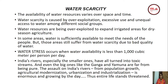India's rivers, especially the smaller ones, have all turned into toxic streams, and even the big ones like the Ganga and Yamuna are far from being pure. The assault on India's rivers from population growth, agricultural modernization, urbanization, and industrialization is enormous and growing day by day. This entire life stands threatened, and we all know that our Earth is called the blue planet because of water and how important water is for all our life and existence.